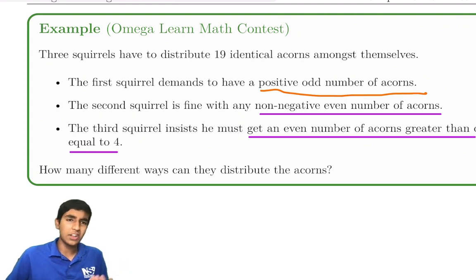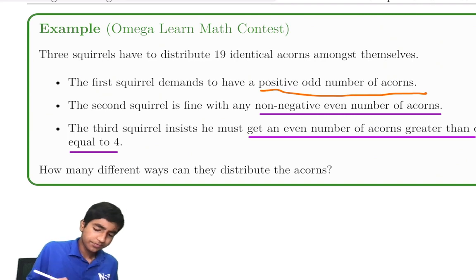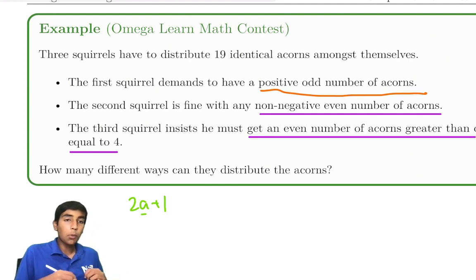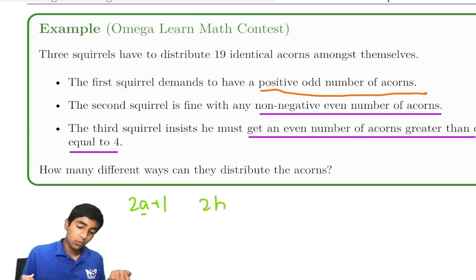So how can we do this with odd and even constraints? Let's represent these as variables. The first squirrel gets a positive odd number, so let's say it's 2a + 1 where a is non-negative. If a is 0 or more, then 2a + 1 can be any odd number. Second squirrel gets any non-negative even number, let's say 2b.